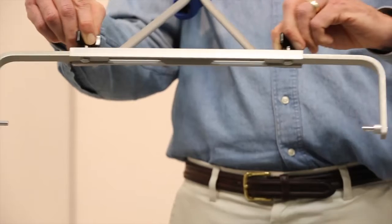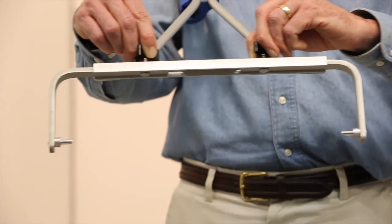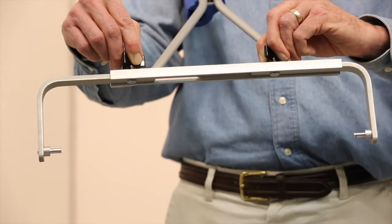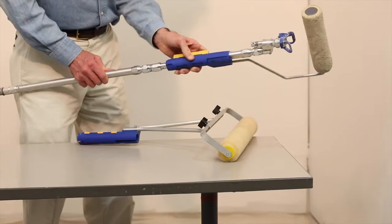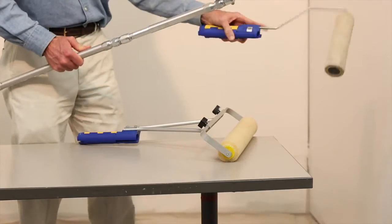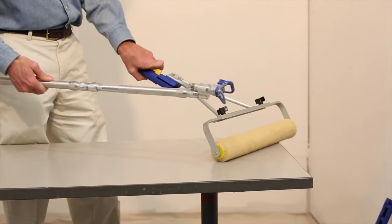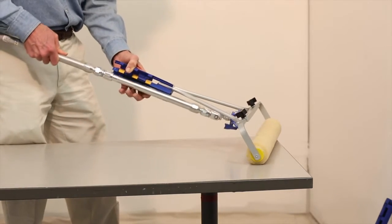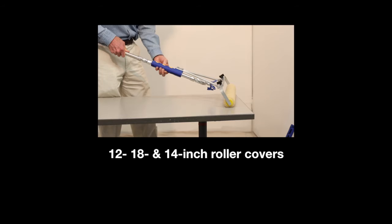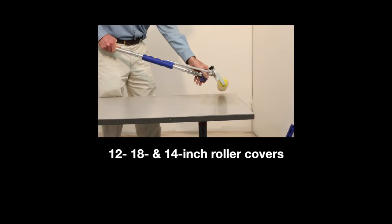The 18-inch adjustable version is available as just a handle or as a complete system. The handle is interchangeable with the 9-inch version. The 18-inch jet roller is used for larger areas and adjusts to hold 12, 18, and 14-inch roller covers.